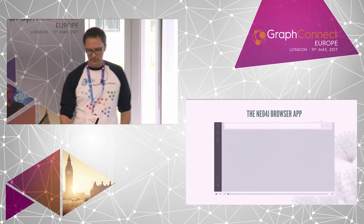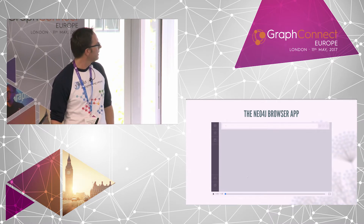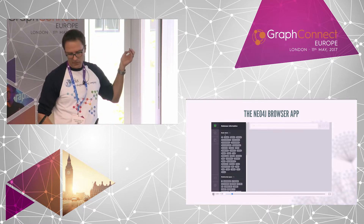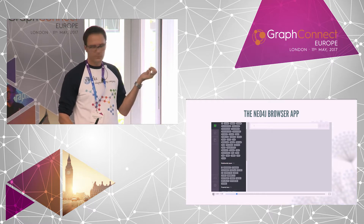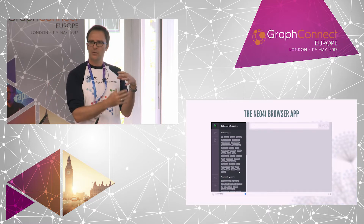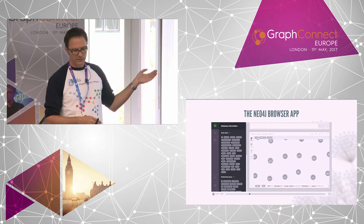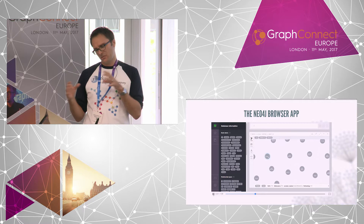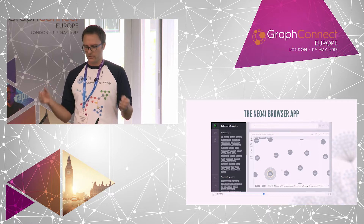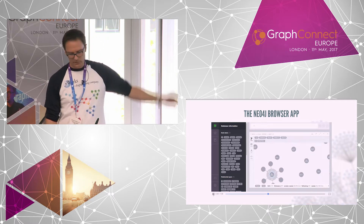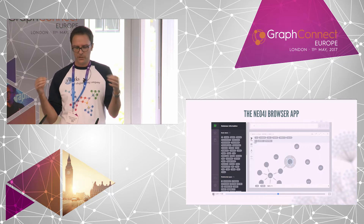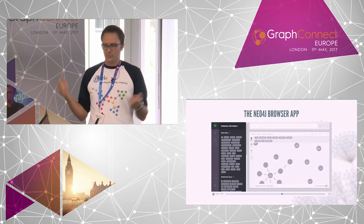So what tools do we have to learn about the schema? First, there's the Neo4j browser app. In the sidebar there's a list of all labels, relationship types, and property keys, but these are just simple lists with no information on how they relate to each other. If we click on one of these elements the app shows a few random matching nodes, and we can try to construct the schema by interactively exploring the data. However, we have no control over what elements are shown, and this is a lot of manual work that should be automated.